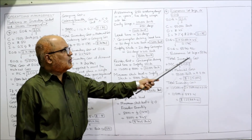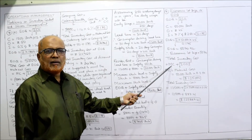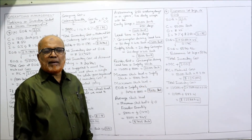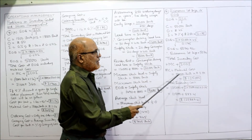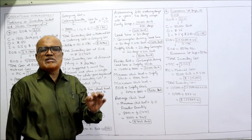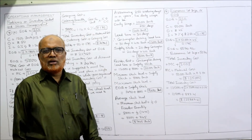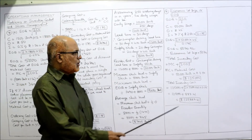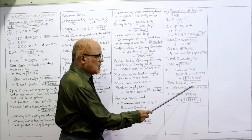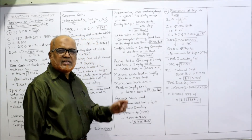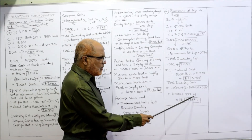For total inventory cost we use a shortcut formula: MC plus square root of 2COI. Material cost MC equals 50,000 units into 2.50 equals 1,25,000. Variable cost equals square root of 2 into 50,000 into 45 into 0.175, which comes to 887.41. Total inventory cost is 1,25,000 plus 887.41 equals 1,25,887.41.